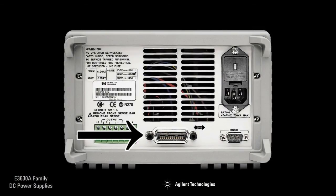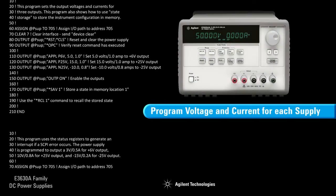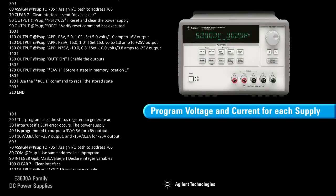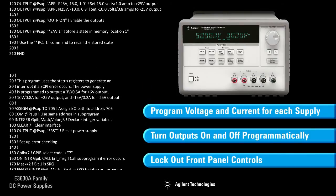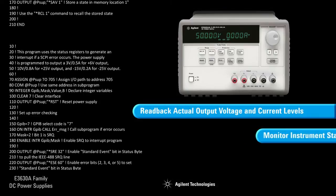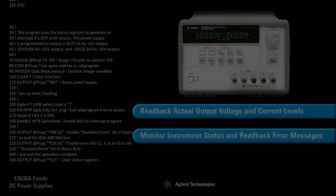These supplies come equipped with both GPIB and RS-232 interfaces. The voltage and current of each supply can be independently programmed, the outputs can be turned on and off, and the front panel can be locked out. You can read back output voltage and current levels, instrument status, and error messages.